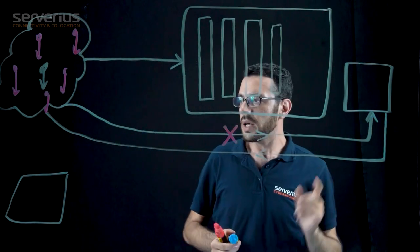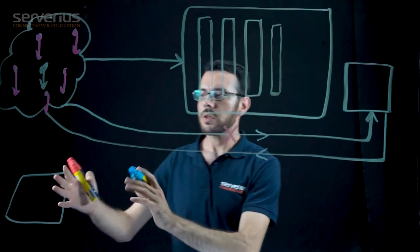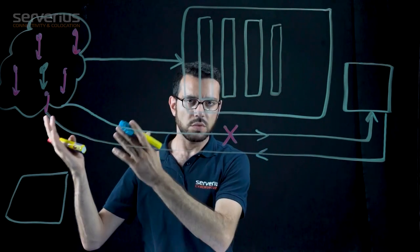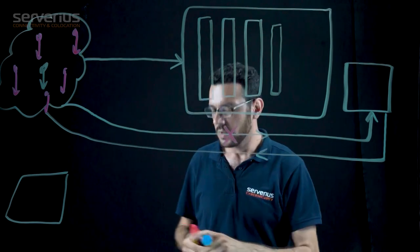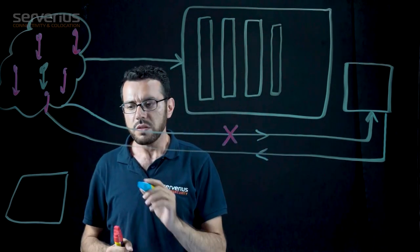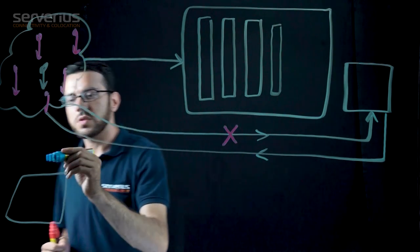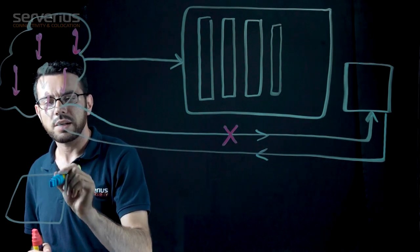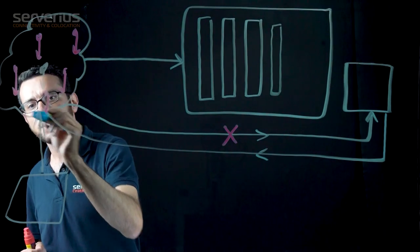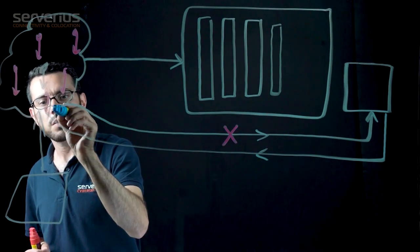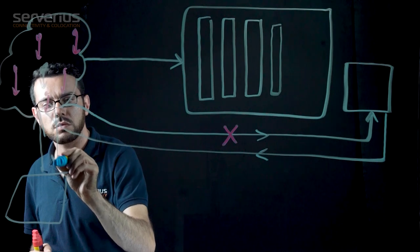Now if your network is hosted outside of Serverius data center, in this case the traffic goes directly from your infrastructure or network to the internet, and incoming traffic also the same.